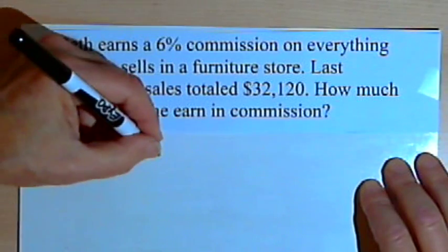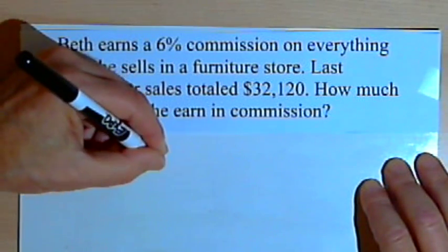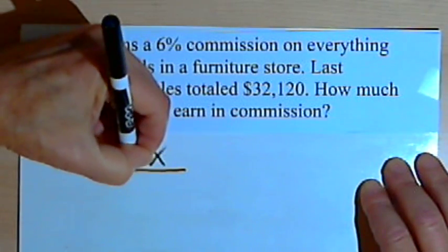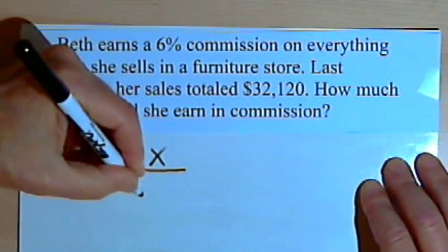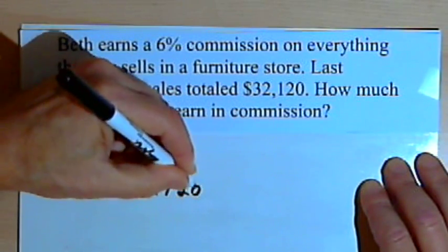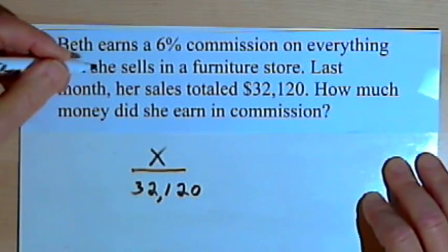We're looking for the amount of money she earned in commission, that would be x. That's going to be the numerator of a fraction. The denominator will be the total amount that she sold, $32,120.